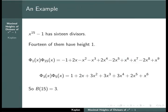We start with an example. Let n be equal to 15. x to the 15 minus 1 has exactly 16 divisors. Computation shows that 14 of them have height 1. One of them has height exactly 2, and one of them, phi 3 times phi 5, has height exactly 3. So b of 15 is equal to 3.